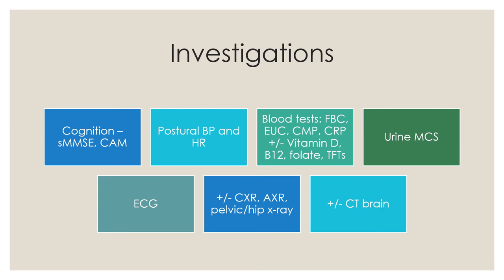Investigations: you can be selective, but in general these may be ordered for falls — cognition exam such as standard MMSE or CAM for delirium, postural blood pressure and heart rate, blood tests including full blood count, EUC, CMP, CRP, plus or minus vitamin D, B12, folate, and thyroid function to look at nutritional status. Do a urine to rule out infection. ECG to rule out syncope. X-rays to rule out bony injuries, as well as a CT brain.